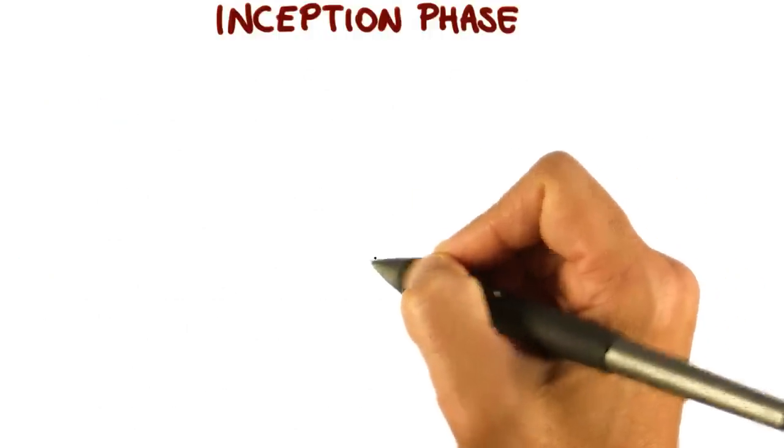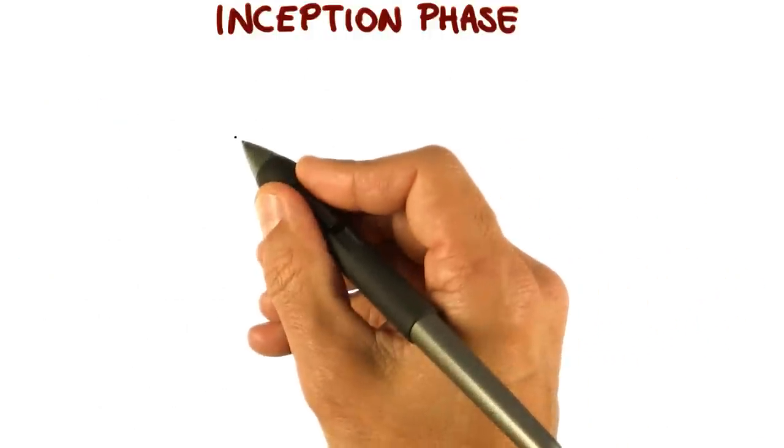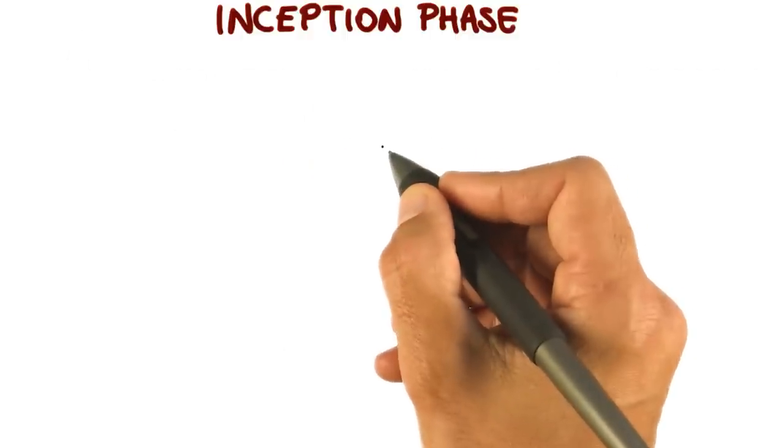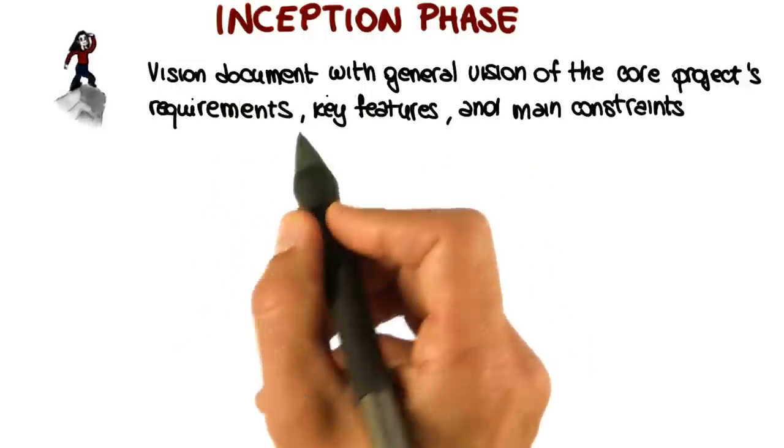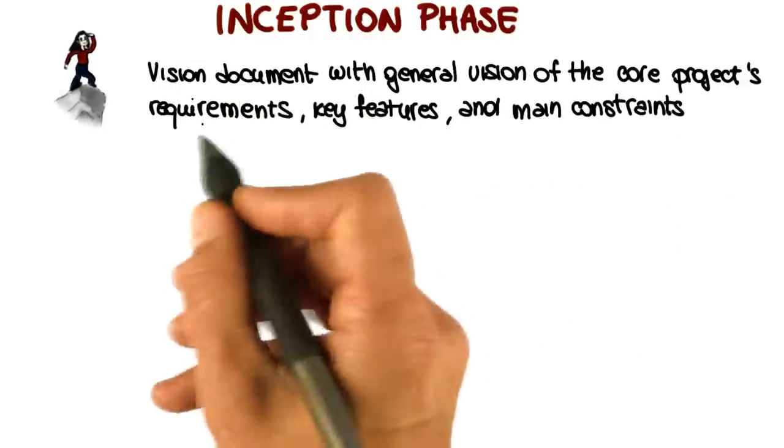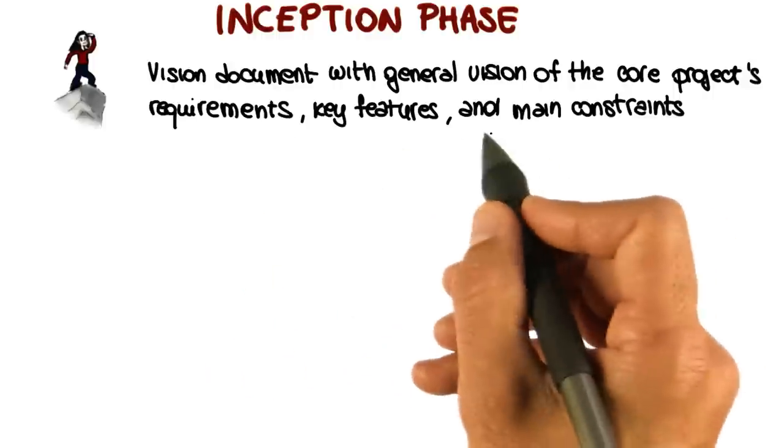Specifically, the inception phase generates several deliverables. It is very important that you pay attention so that you understand what these deliverables are. Starting from the first one, which is the vision document. This is a document that provides a general vision of the core project's requirements, key features, and main constraints.